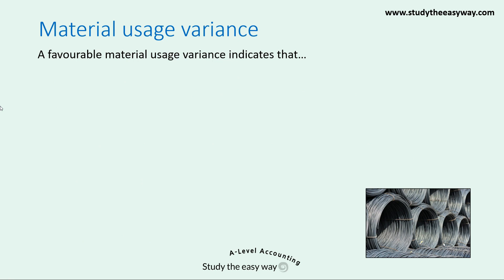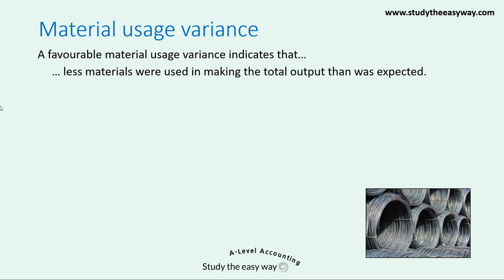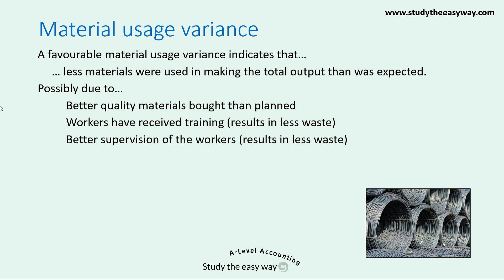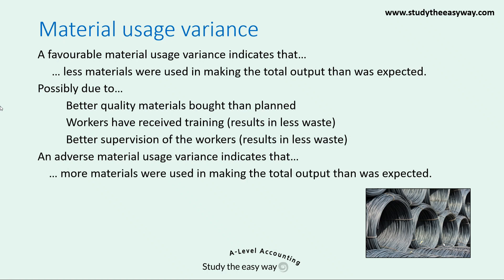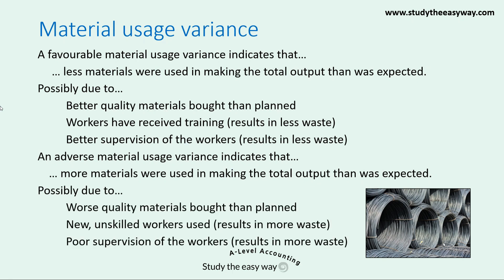A favourable material usage variance indicates that less material was used than expected. Possible reasons: better quality materials were bought, leading to less waste as they're easier to handle; workers received training resulting in less waste; or workers were better supervised. An adverse material usage variance indicates more materials were used than expected. Possible reasons: worse quality materials are difficult to handle and cause more waste; new unskilled workers result in more waste; or poor supervision of workers.